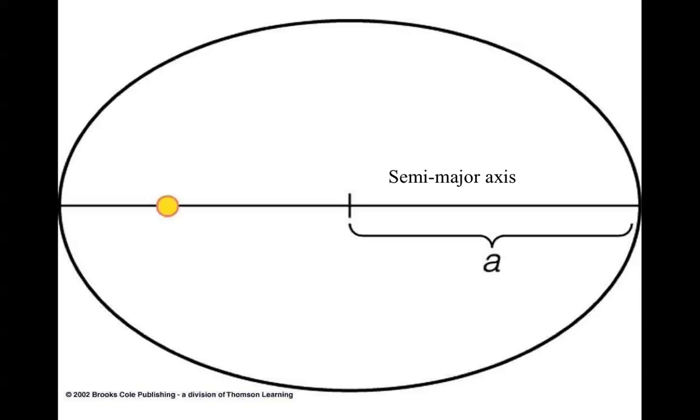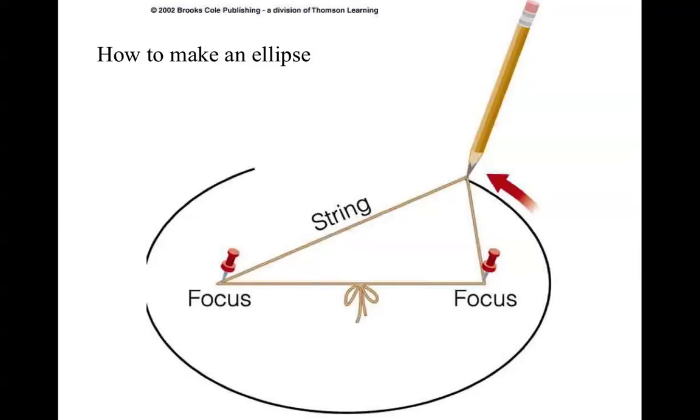You can draw an ellipse by taking a string that's tied together, pinning it at the two foci, and then taking a pencil and moving it around. One of the particular characteristics of an ellipse is that the sum of the distances from any point on the surface to the two foci is constant, and a string will accomplish this for you.